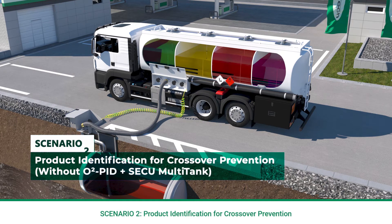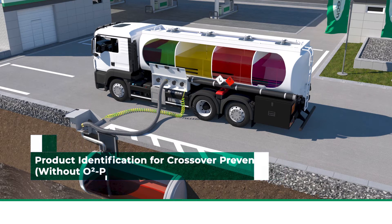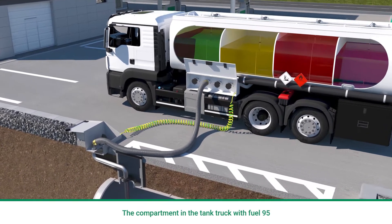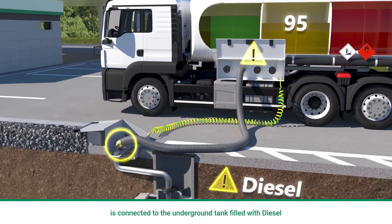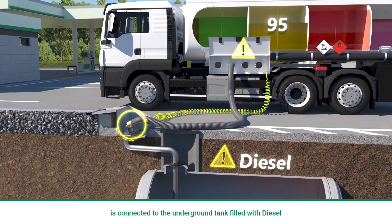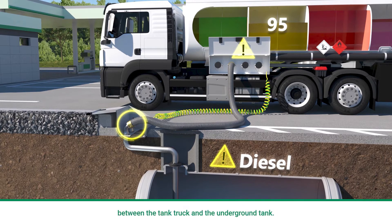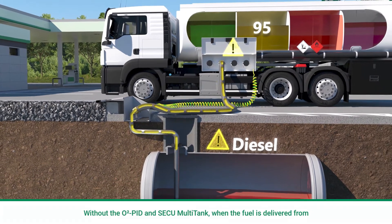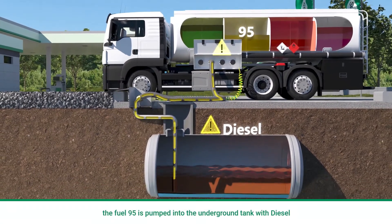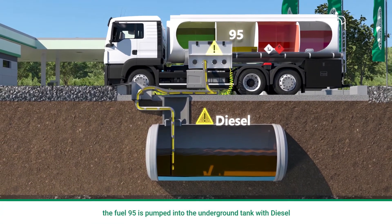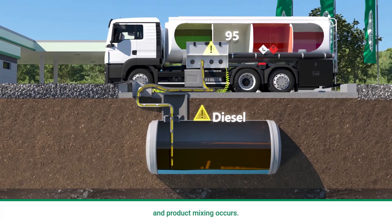Scenario 2: Product identification for crossover prevention without O2 Pit and Seku Multitank. The compartment in the tank truck with fuel 95 is connected to the underground tank filled with diesel through the filling hose. A proper hose connection is established between the tank truck and the underground tank. Without the O2 Pit and Seku Multitank, when the fuel is delivered from the tank truck, the fuel 95 is pumped into the underground tank with diesel and product mixing occurs.